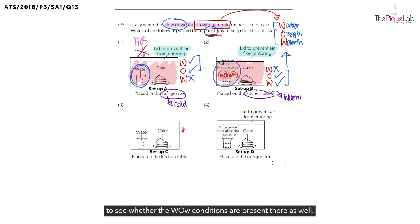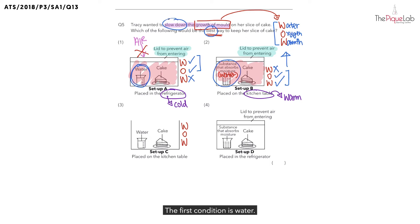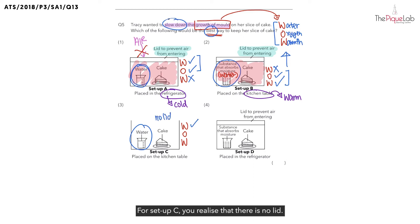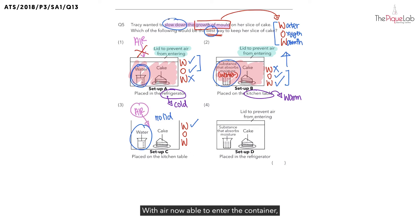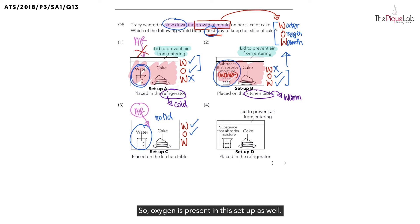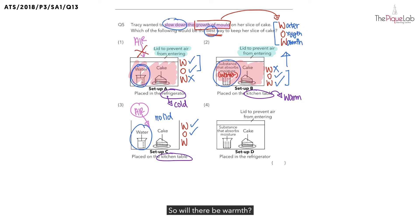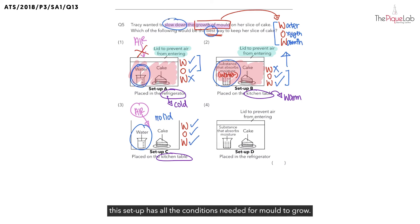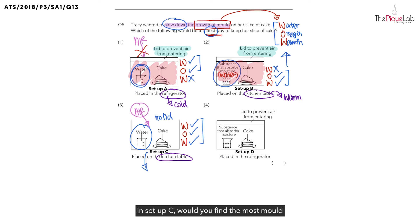Setup B has 2 out of 3 of the conditions needed for mold to grow. Let's examine option 3 to see whether the WOW conditions are present there as well. The first condition is water. Is water present in setup C? Yes. What about oxygen? For setup C, you realize that there is no lid. And with no lid, air is able to enter the container. With air now able to enter the container, the mold on the cake would have access to more air, and with more oxygen, the mold can grow better. So oxygen is present in this setup as well. What about warmth? The setup is placed on the kitchen table, so there will be warmth. And this means that this setup has all the conditions needed for mold to grow. With all the conditions present in setup C, you would find the most mold growing on the cake.